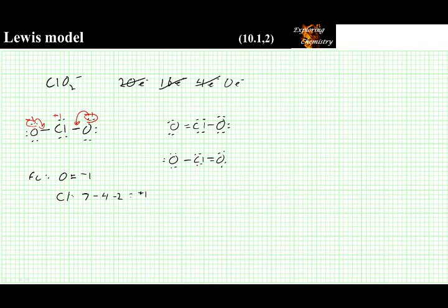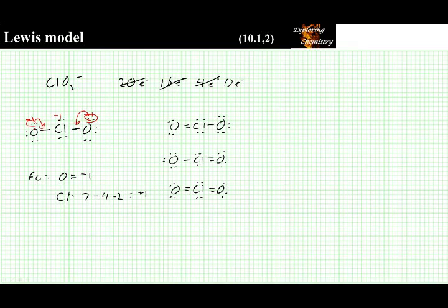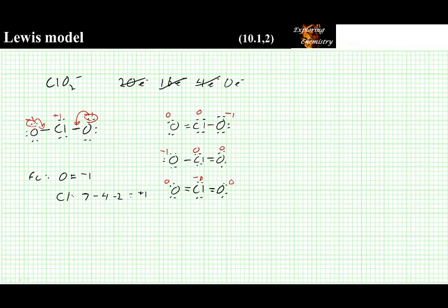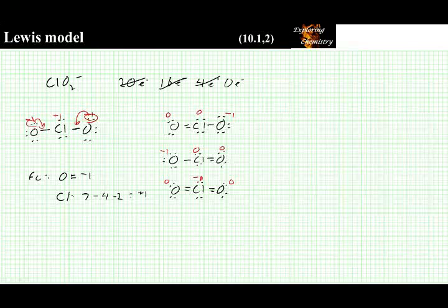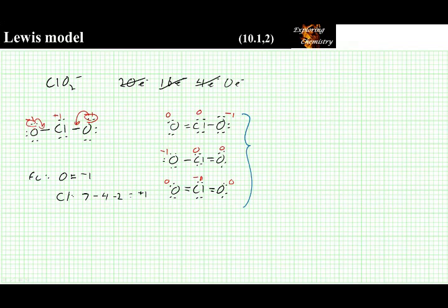There is actually a third option: form a double bond to both oxygen atoms. This is possible because chlorine is as electronegative as the oxygens. Looking at the formal charges: in the first structure, the oxygen on the left has a formal charge of zero, chlorine has a formal charge of zero, and the oxygen on the right is minus one. This is reversed for the second structure. In the third structure, the two oxygens have a formal charge of zero, and the negative one charge is distributed to the central chlorine atom. Since there are three structures that minimize formal charge and distribute charges according to electronegativity, the true structure is the average of all three.